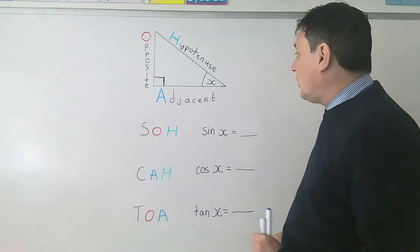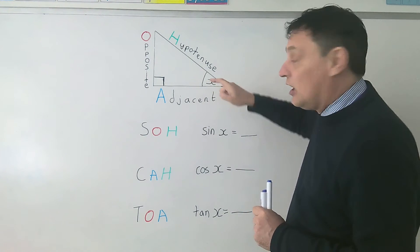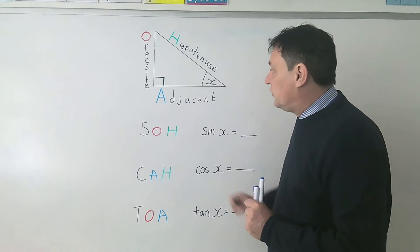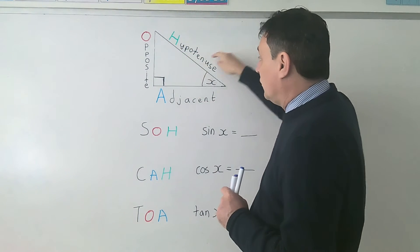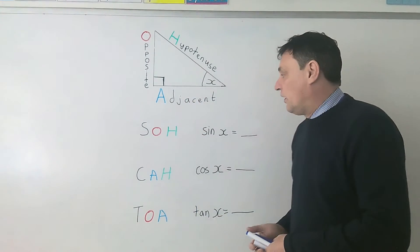Now people sometimes get the hypotenuse and adjacent mixed up because they both sort of touched this angle X here, but the way to remember which is which is that this hypotenuse doesn't touch that right angle and adjacent is the one that's left.